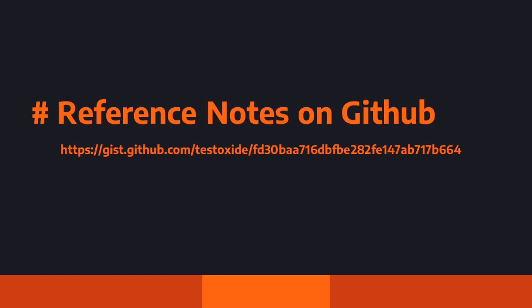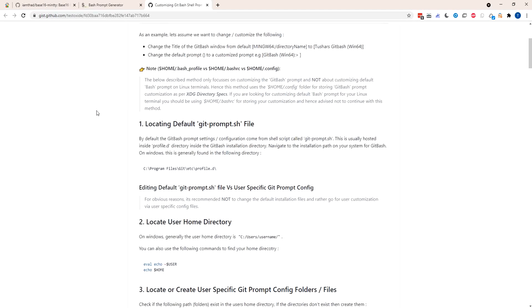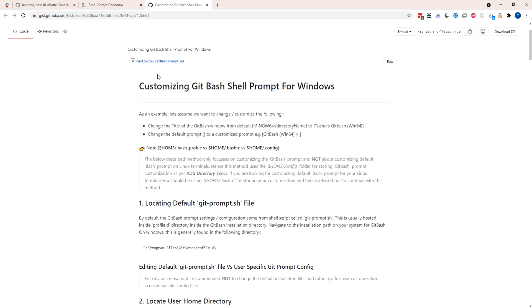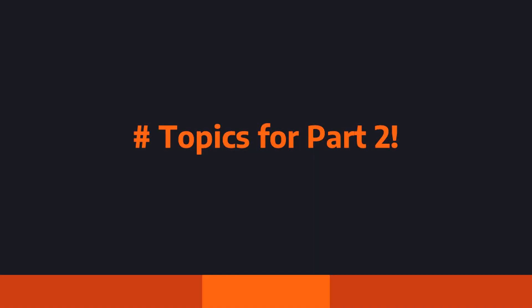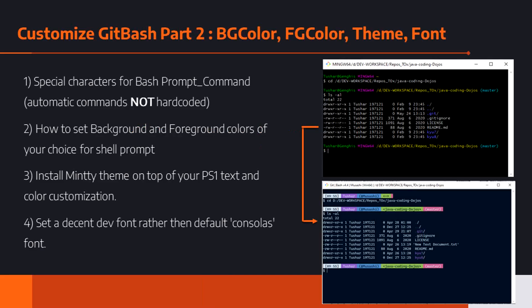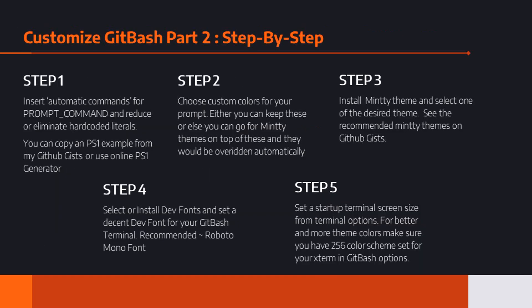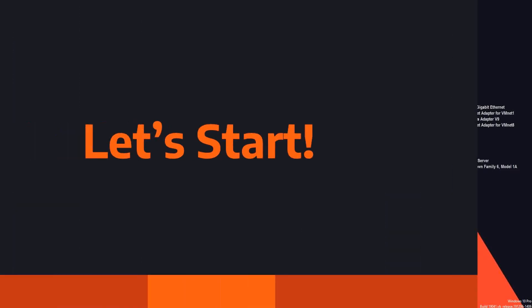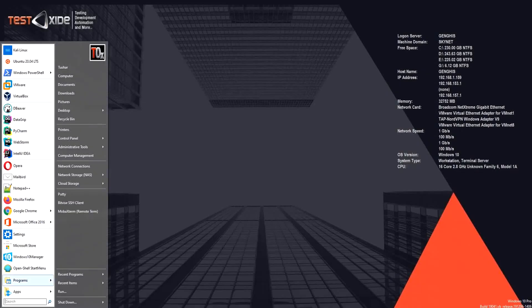I've put all my notes into a GitHub Gist which I'll be walking through in this video, so you're welcome to visit and reference it. In Part 2 we'll see how to use automatic commands rather than hard-coding values in the PS1 string, how to set background and foreground colors, how to install the Minty theme, and I'll recommend a couple of dev fonts.